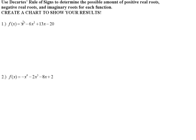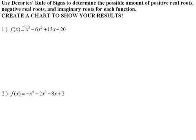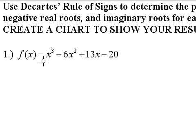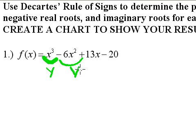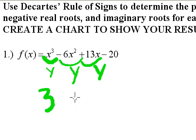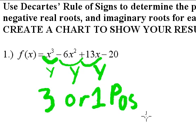To use Descartes' rule of signs, you start from the highest degree term and count down each degree to see if there's a sign change or not. It starts out with a positive x cubed to a negative six x squared — did it change sign? Yes. Then from a negative to a positive — yes. And from a positive to a negative — yes. So that means there are possibly three positive zeros, or moving down by two, three or one positive zeros for this function.